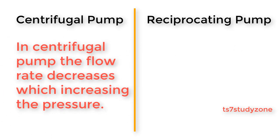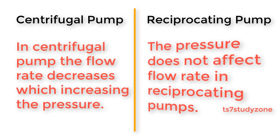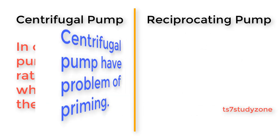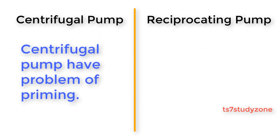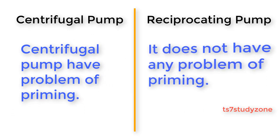In centrifugal pumps, the flow rate decreases with increasing pressure. In reciprocating pumps, pressure does not affect the flow rate. Centrifugal pumps have a problem of priming, while reciprocating pumps do not have any problem of priming.